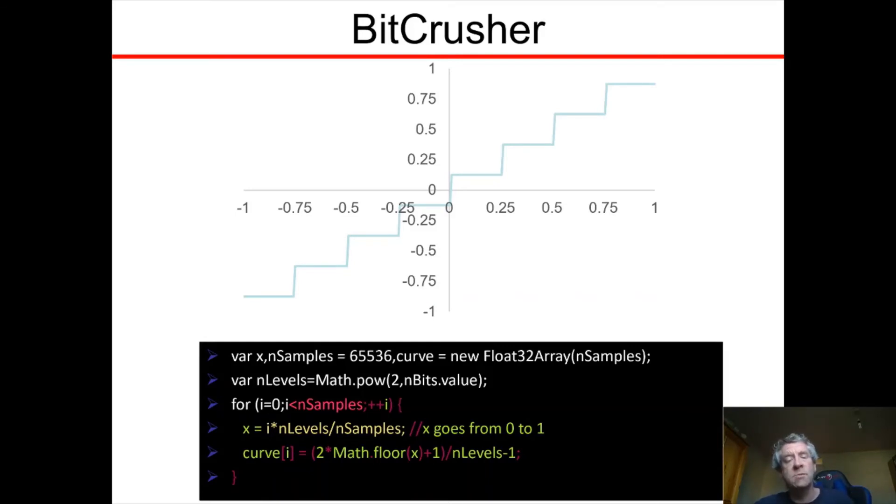And then we specify x as a function of the index of values in the array. It's i times the number of levels divided by the number of samples. What that does is map the 0 to 65535, 1 less, and it maps that to the range 0 to 1, or very close to 1. So 0 to 1.